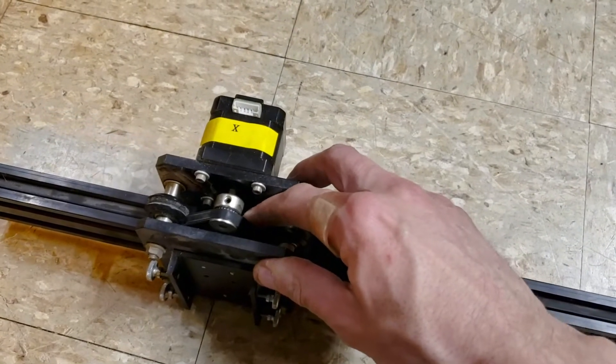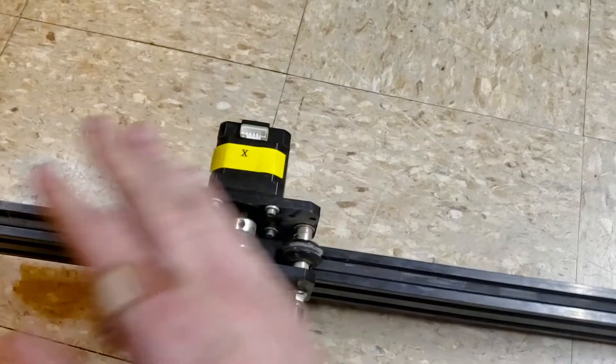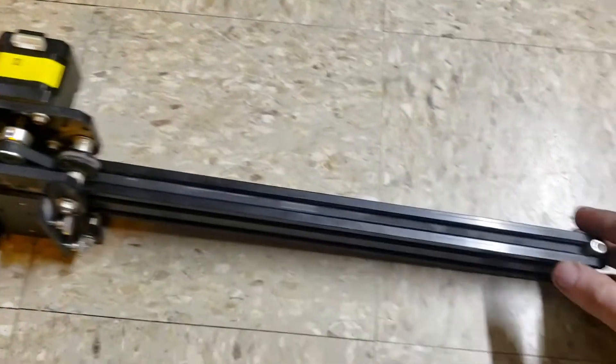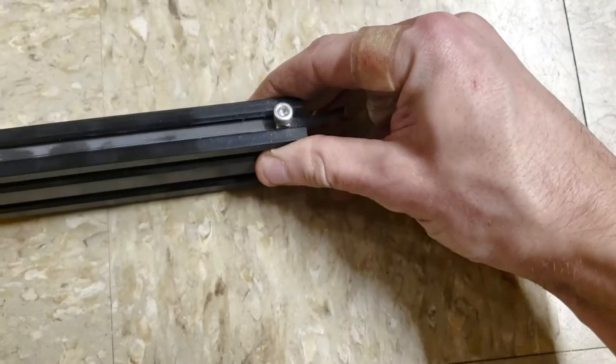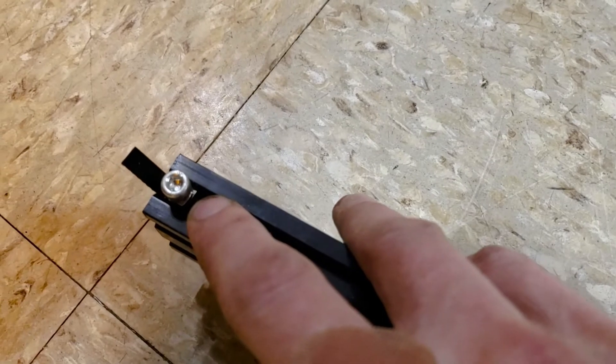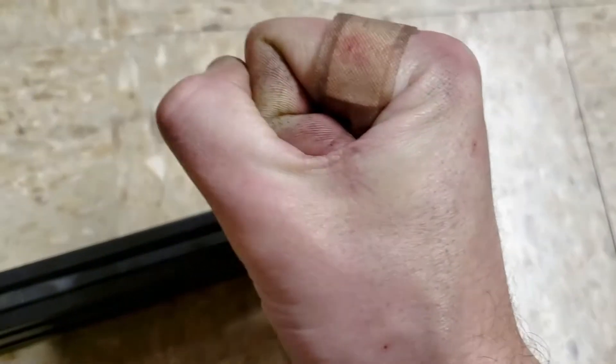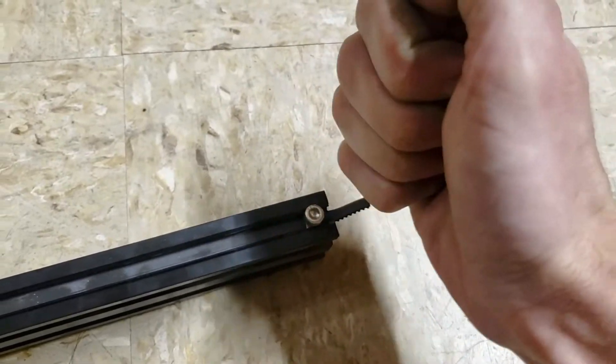Ideally you want this belt as loose as possible but not to skip teeth under acceleration. The way that you set the belt tension is pretty simple. You loosen either nut - there's a nut bolt on each side with a T-channel nut. You loosen it and you just have to pull with the wrench and either tighten or loosen it.